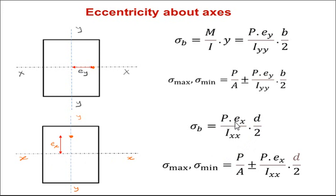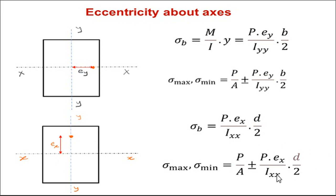So direct compressive stress is P upon A plus or minus bending stress P into ex, that is the bending moment — the load acting at distance ex from the xx axis — divided by Ixx, the moment of inertia about the xx axis, into y which is the extreme fiber distance d by 2. Half of the depth is taken in the above formula for xx axis, and half of the breadth b by 2 is taken for the yy axis formula.